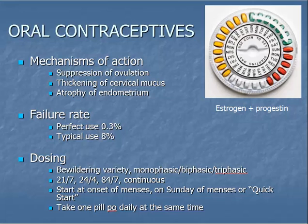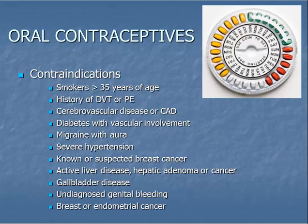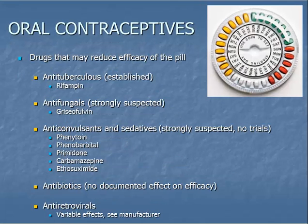Oral contraceptives are birth control pills taken by mouth once daily. They are a commonly used type of contraceptive and contain an estrogen plus a progestin. Listed here are the mechanisms of action, failure rate, and dosing. Oral contraceptives have many non-contraceptive benefits and also some potential adverse effects. You should know the contraindications to oral contraceptive use to properly counsel your patients. Some medications taken concurrently with oral contraceptives can reduce the pill's efficacy; several medications known or suspected to cause this effect are listed here.